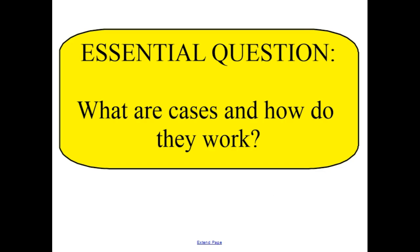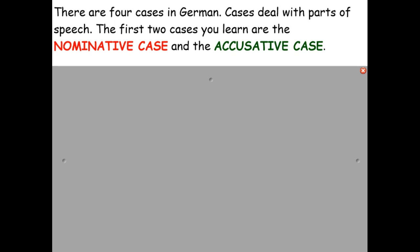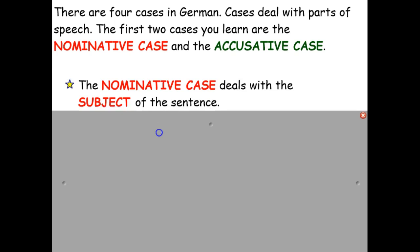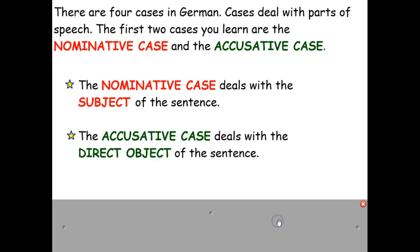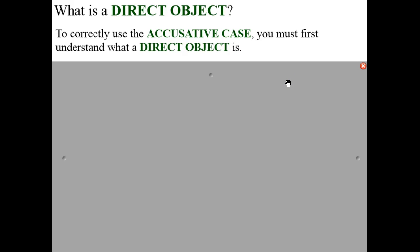Our essential question remains: what are cases and how do they work? As a reminder, there are four cases in German. Cases deal with parts of speech. The first two cases you learn are the nominative case and the accusative case. The nominative case deals with the subject of the sentence, and the accusative case deals with the direct object of the sentence.